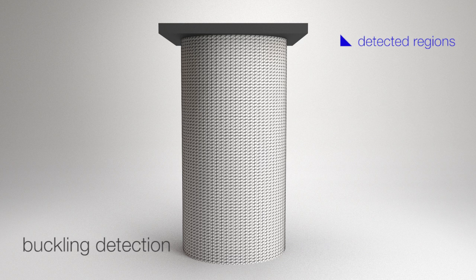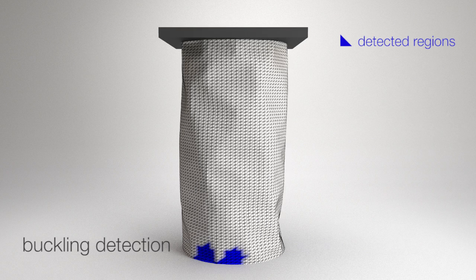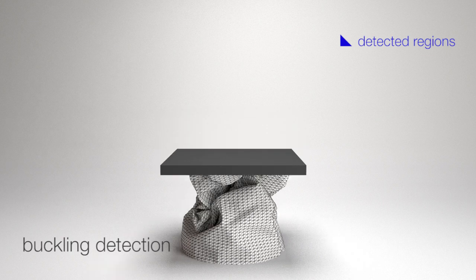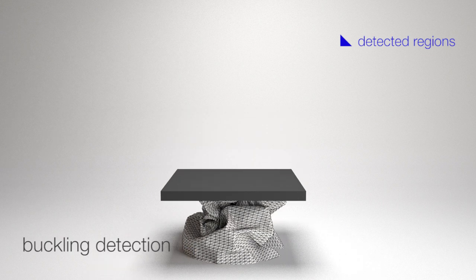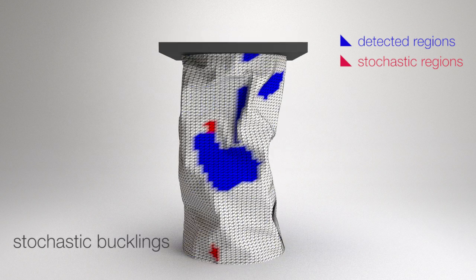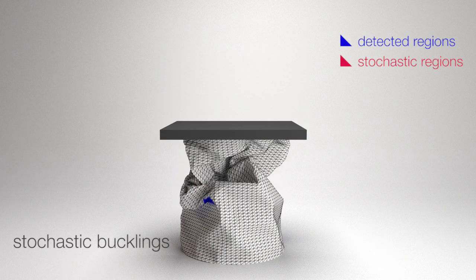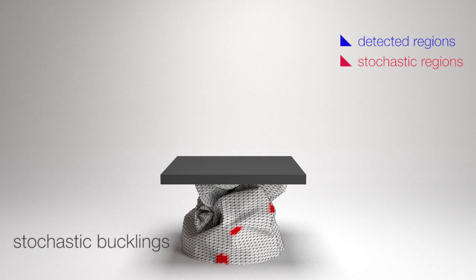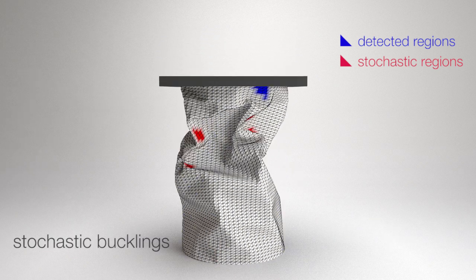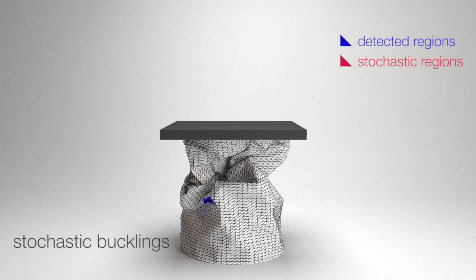Since crumpling sounds primarily originate from buckling, we use a curvature rate metric to detect the visually significant buckling events. To capture the visually insignificant bucklings that still produce audible sound, we propose a stochastic enrichment model that follows a power law distribution of buckling energies, as observed in many real-world materials.